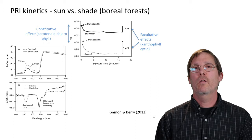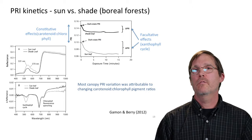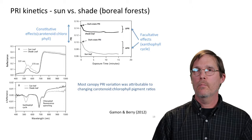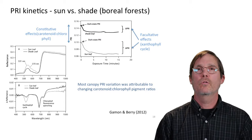You can tease these apart based on kinetics using dynamic approaches — seeing the difference in the xanthophyll cycle or the longer-term constitutive pigment pool size effects. The take-home message is that within a boreal forest canopy, most of the variation in PRI is actually attributable to these pool size changes, not the subtle diurnal changes. If you measure PRI randomly, it's the carotenoid/chlorophyll pool size effects that really dominate the signal, with the subtle diurnal facultative effect buried within.